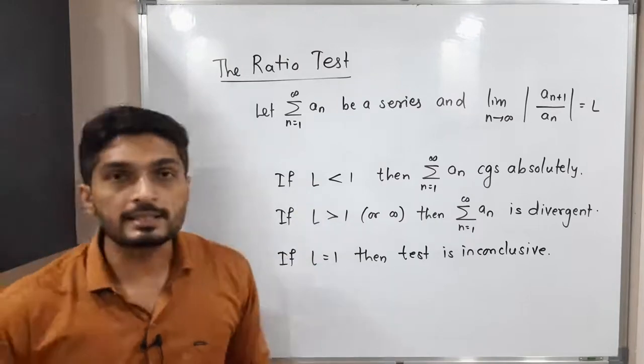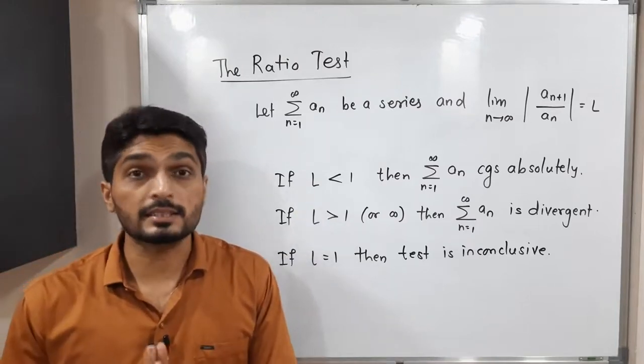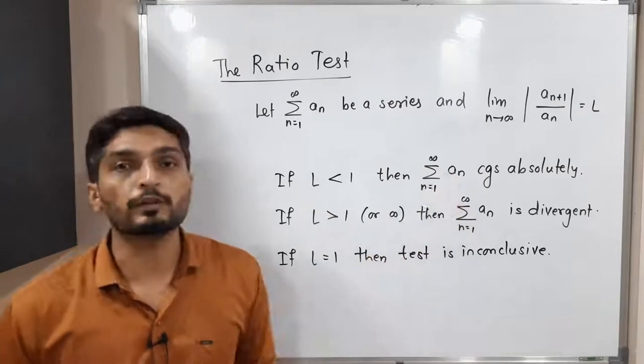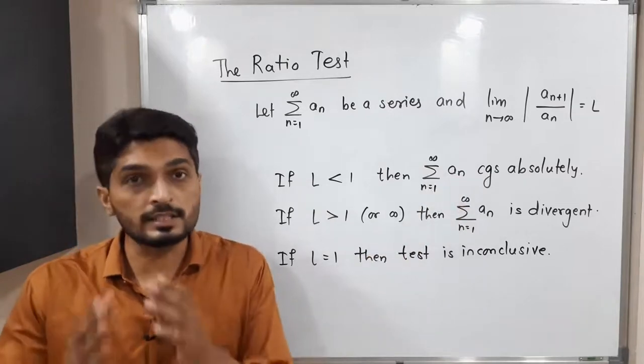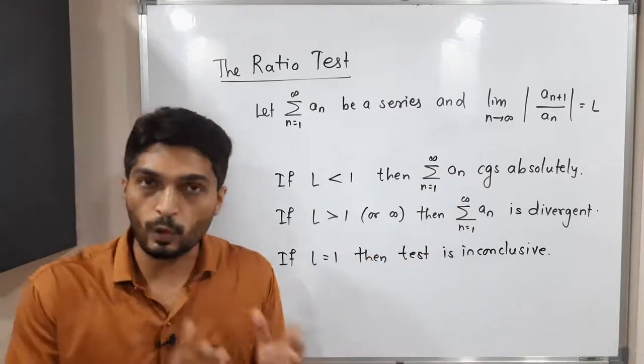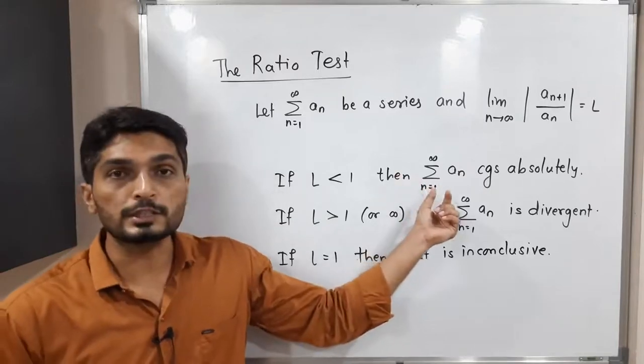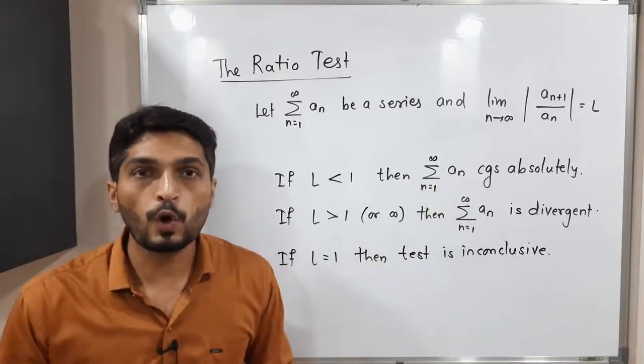So if our L is less than one, then we say the series is absolutely convergent. You know that when the series is absolutely convergent, we say it is a convergent series. So therefore it is absolutely convergence and hence it is convergent.